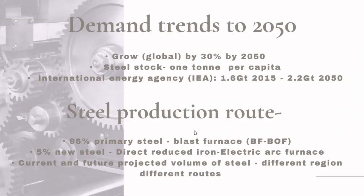The global steel production is estimated to grow by 30% by 2050, where production will come more from secondary steel than primary steel. Developed countries have steel stocks of 12 to 13 tons per capita, but India has a steel stock of only 1 ton per capita. The International Energy Agency estimates that global demand for steel could rise from 1.6 gigaton in 2015 to 2.2 gigaton by 2050, and for India, it is likely to grow significantly in coming decades.